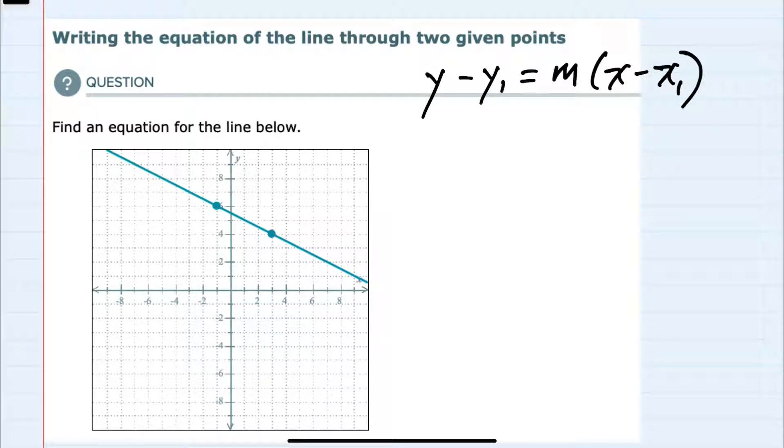And to use the point-slope formula, we need a point, and we have a couple of those, but we also need the slope m. And to find the slope, I'm going to use the formula m equals y2 minus y1 over x2 minus x1.